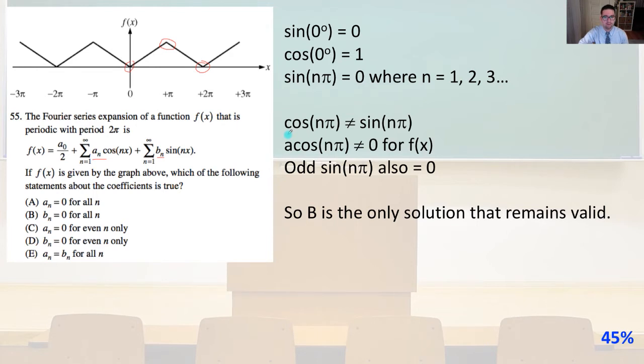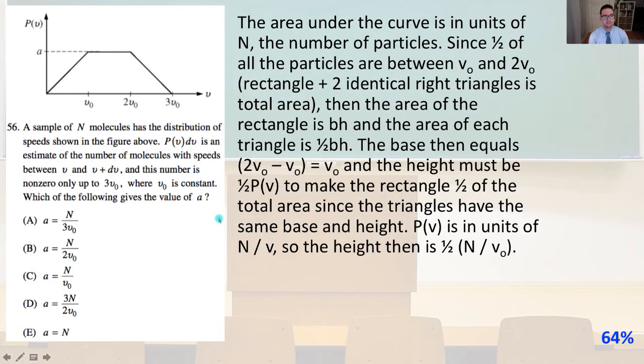So let's just walk through some of these answers because we can say, and we know that cosine of nπ does not equal sine of nπ, so we can rule out answer E. A cosine of nπ does not equal zero for f of x, so we can again rule out more answers. And odd sine of nπ also equals zero. So again, that just leaves us with answer B. It's the only solution that remains valid, and so that is our correct answer.